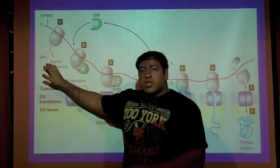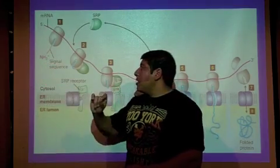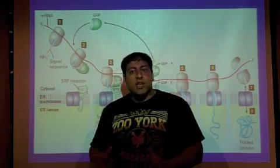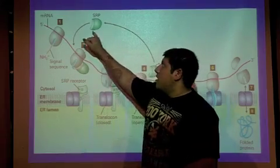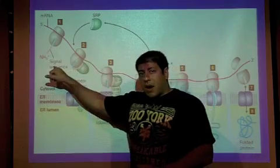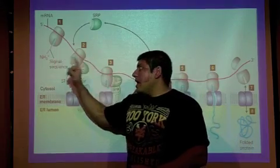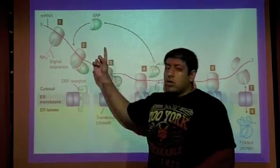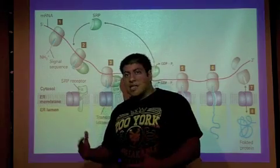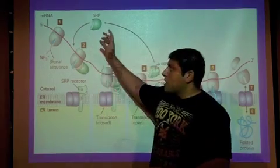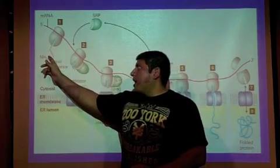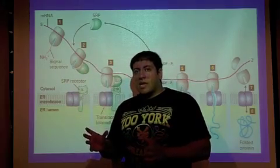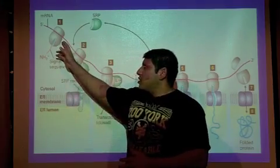So the signal sequence emerges from the ribosome. When this happens, this is going to cause the SRP, the signal recognition particle, to go ahead and bind to the ribosome and to the signal sequence. The signal recognition particle is a cytoplasmic protein which lives and exists out in the cytoplasm. So it comes in, it's going to bind to the signal sequence, and then the same protein has a long domain that binds to the ribosome.